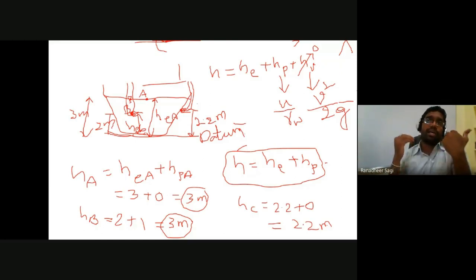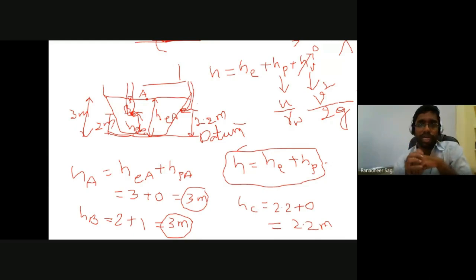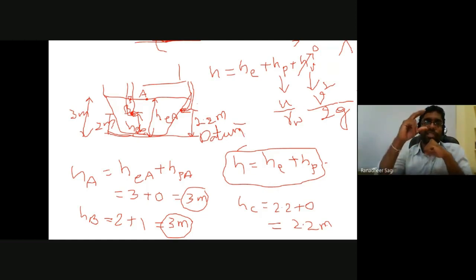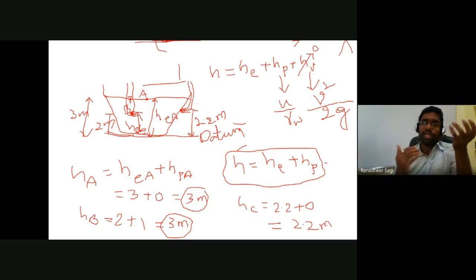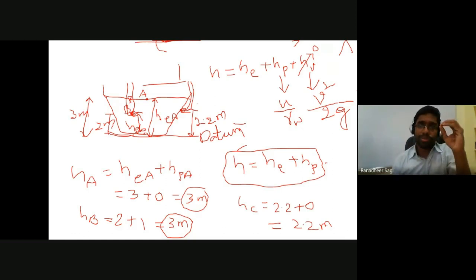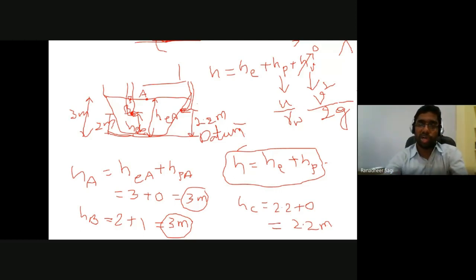Will the water completely drain from the bucket? No. Water will drain only up to 0.8 meters from the top water surface. Why? Because there was only a total head difference of 0.8 meters. Due to this total head difference, flow happens from inside the bucket to outside through point C. Once that head difference is consumed, flow stops. This demonstrates that total head difference governs flow through soil.